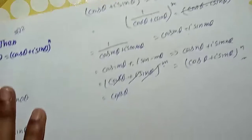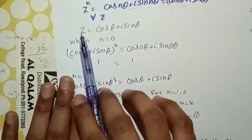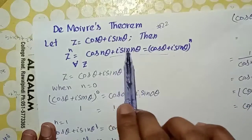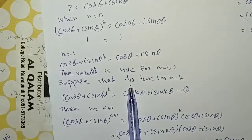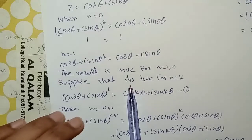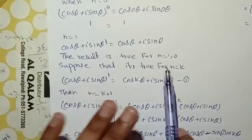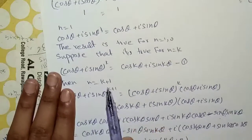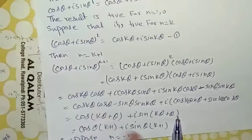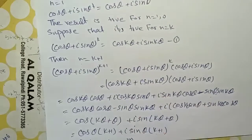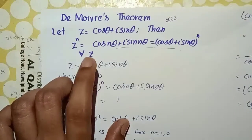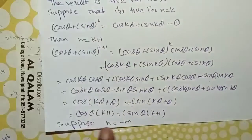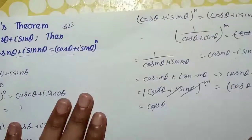This holds for all integers. To summarize: we proved n equals 0 gives 1 equals 1, and n equals 1 is also true. Then by mathematical induction, after proving the base cases n equals 0 and 1, we supposed the result true for k, proved it for k plus 1, and for negative integers used direct proof. Hence De Moivre's Theorem is proved for all integers.